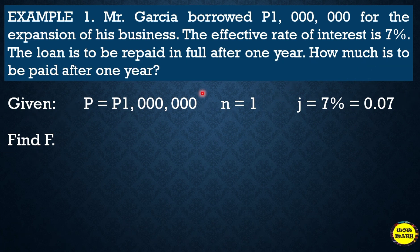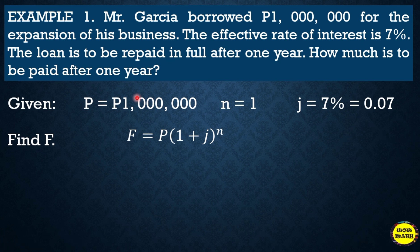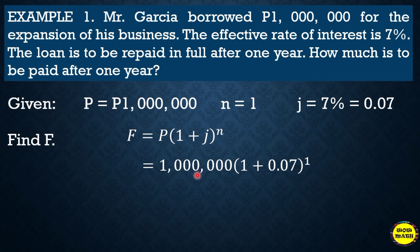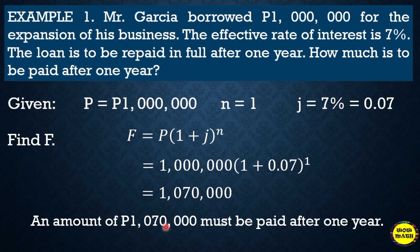Since the question asks how much is to be paid after one year, we are looking for the future value. Using the formula: Future Value = Principal × (1 + j)^n, we substitute: one million × (1 + 0.07)^1. Simplifying with a calculator, the answer is one million seventy thousand. So an amount of one million seventy thousand must be paid after one year.